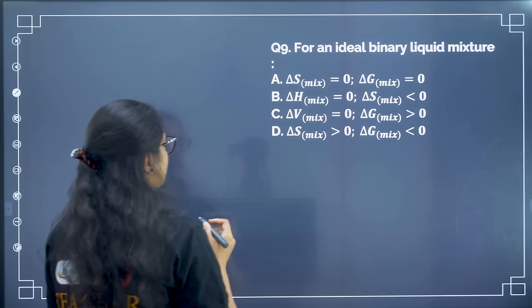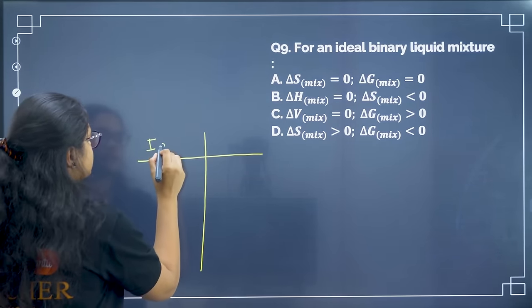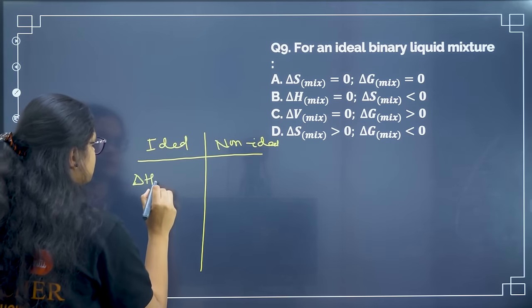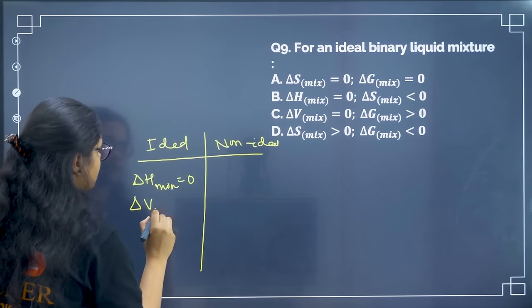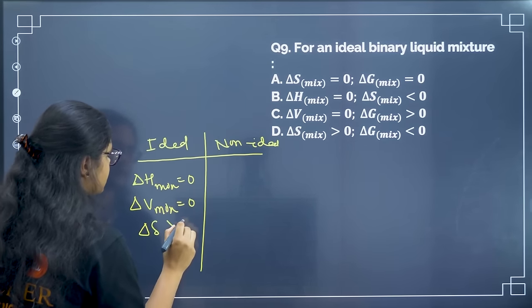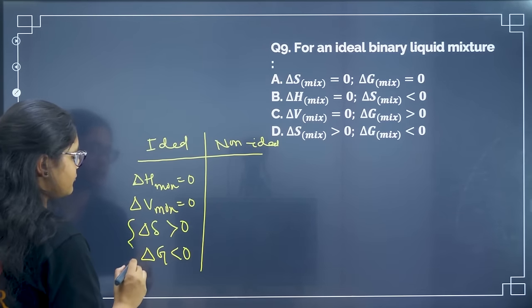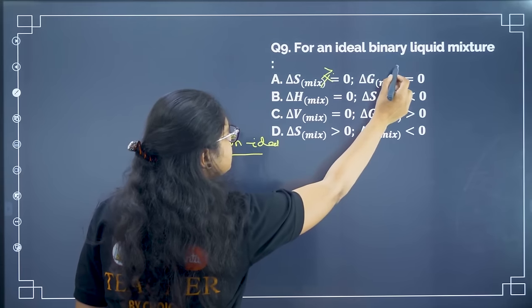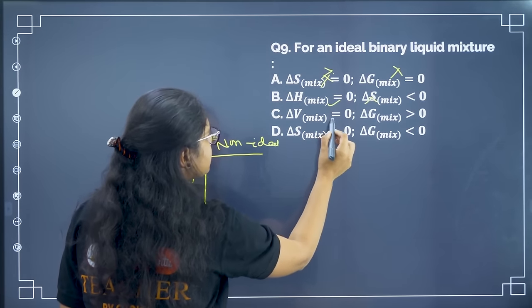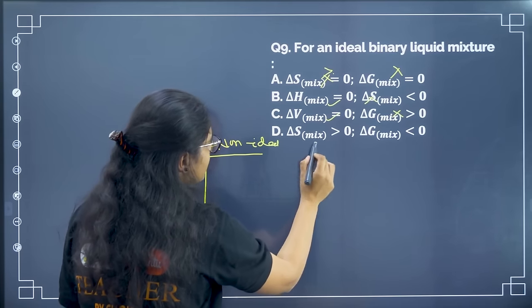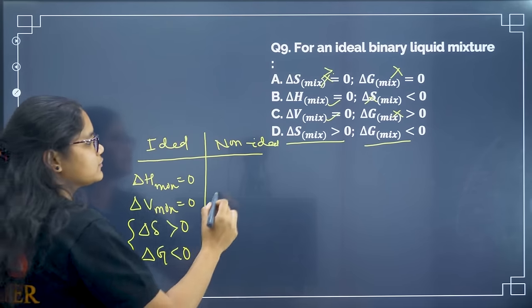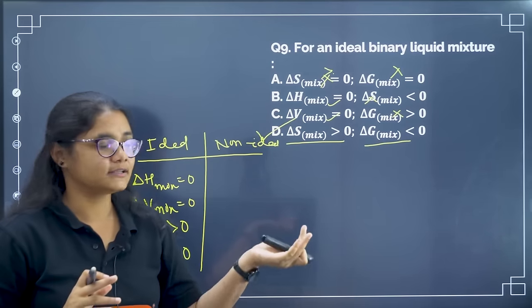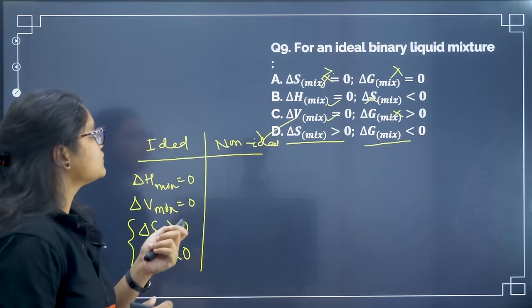Simple question on ideal solution thermodynamic properties. For an ideal solution: ΔH_mix = 0, ΔV_mix = 0, ΔS_mix > 0, and ΔG_mix < 0. Checking the options — only option D correctly states ΔS_mix is positive and ΔG_mix is negative. Correct answer is option D. By learning the table comparing ideal and non-ideal solutions from the previous video, this question is easily solved.